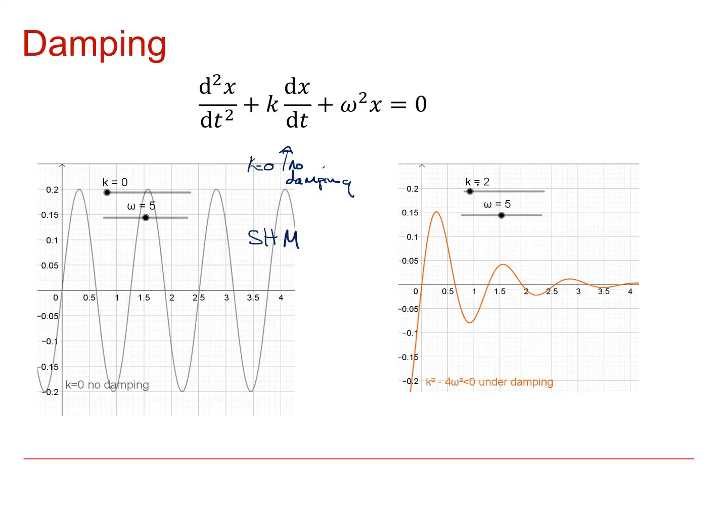In this situation, I've got k equals 2 omega equals 5. And if I look at the discriminant, k squared minus 4 omega squared, I'm going to get 4 minus 100, which is clearly less than 0. And in this situation, I will get complex roots to my auxiliary equation and therefore get oscillations, which dampen down over time. This is known as underdamping because you get oscillations that gradually decay.